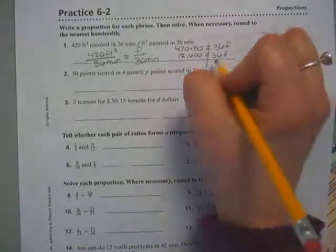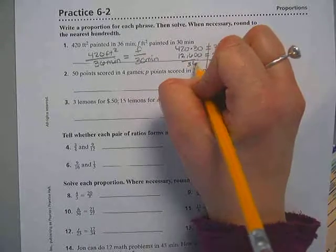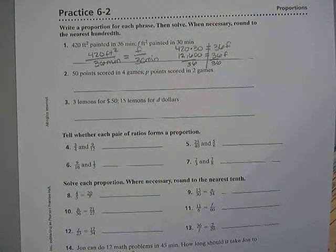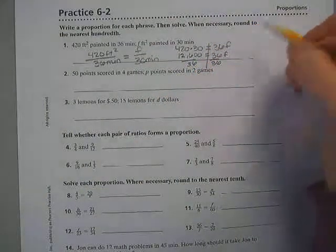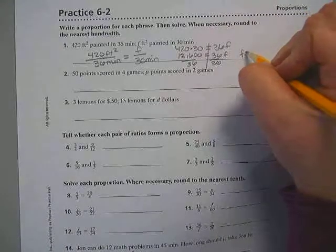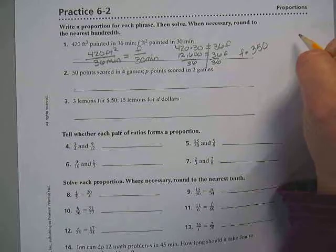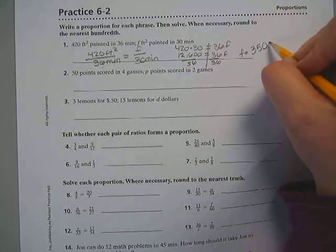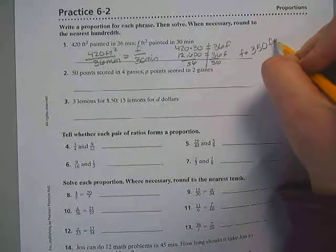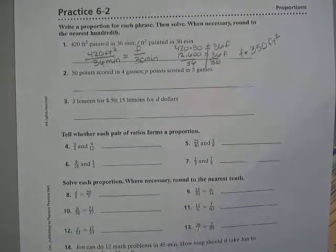What am I going to do to both sides? Divide by 36. F equals 350. And that's going to be in square feet, right?